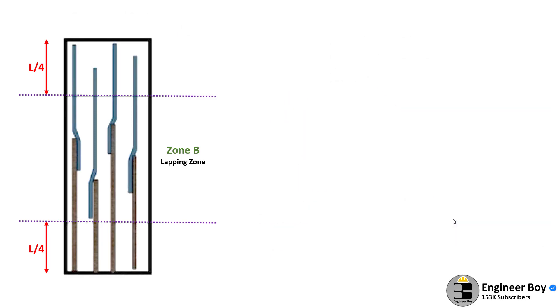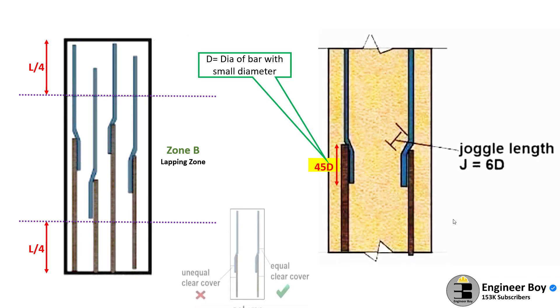Lastly, when tying bars in the lapping zone, 60D joggles must be provided and the joggle part of the bars should be placed over the inner surface of the bottom bar. This provides a uniform concrete cover.